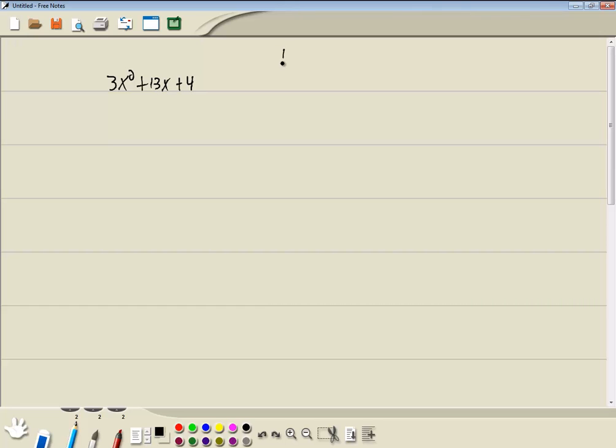Now this would be the key number method. The reason why I say key number is because we have x², and there's a number in front of our x².